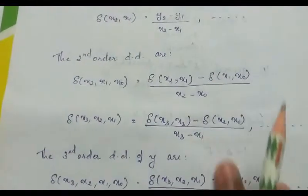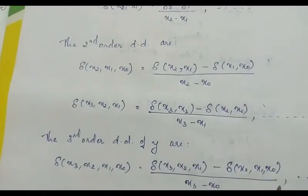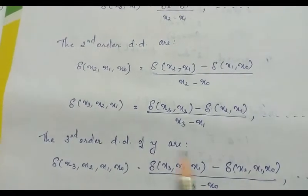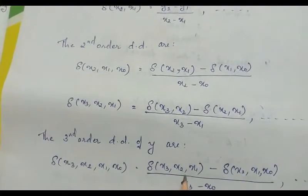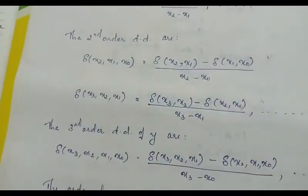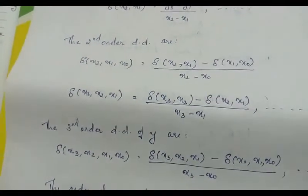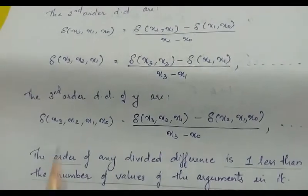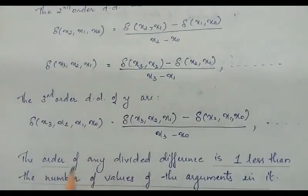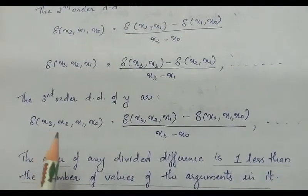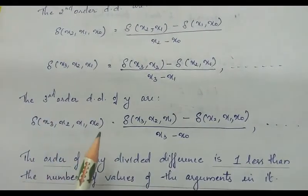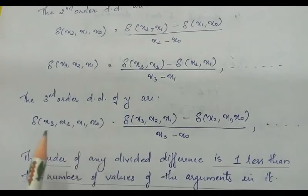The third order divided difference is written as delta(x3, x2, x1, x0) equals delta(x3, x2, x1) minus delta(x2, x1, x0), divided by x3 minus x0. The important thing to remember is that the order of any divided difference is one less than the number of arguments in it.